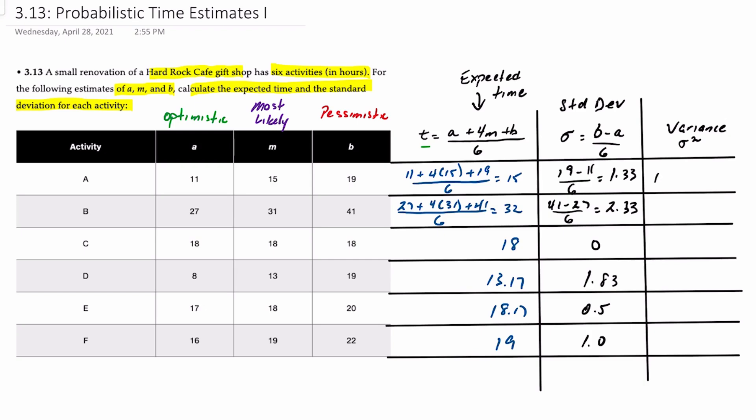So the variance is simply the square of the standard deviation. So if we take 1.33 squared, that will give you about 1.77. The alternative of course for this is to take B minus A over 6 and square that formula. And you'll end up with the variance. And then you could calculate the standard deviation or sigma by taking the square root.